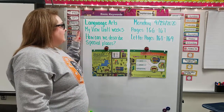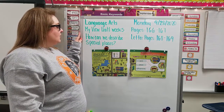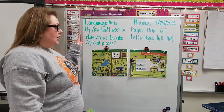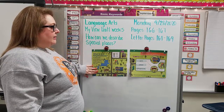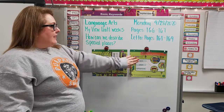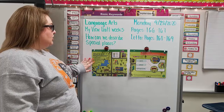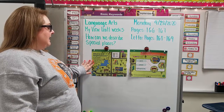Our question this week is: how can we describe special places? So when you open up to the beginning of the chapter, week five in MyView for unit one, you will see 'What is in a neighborhood?'